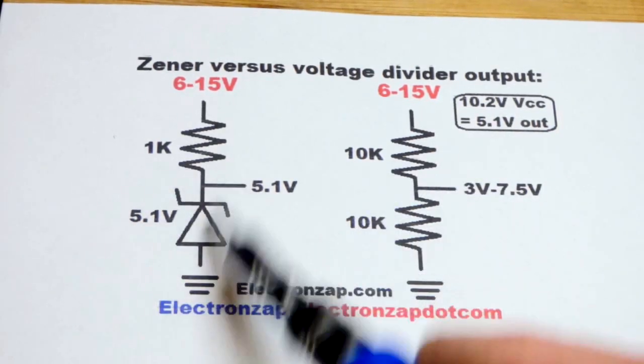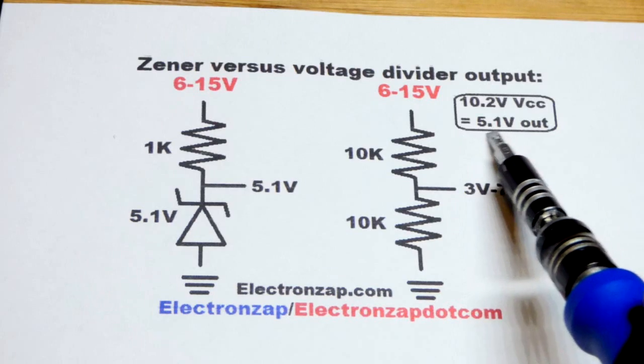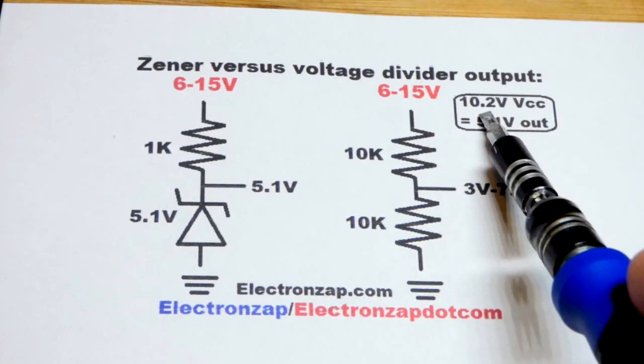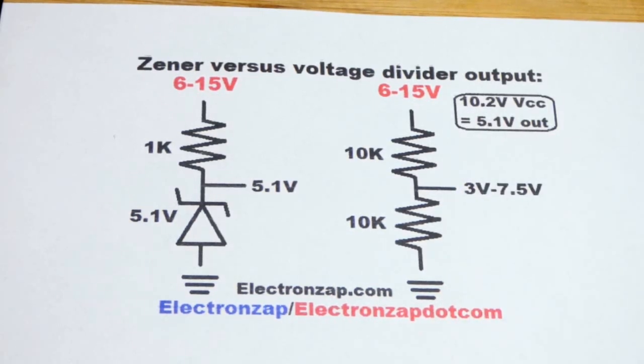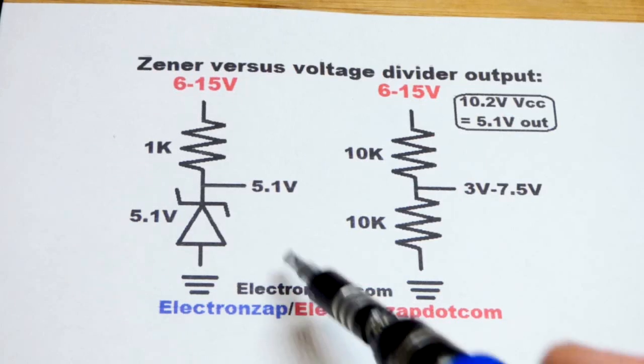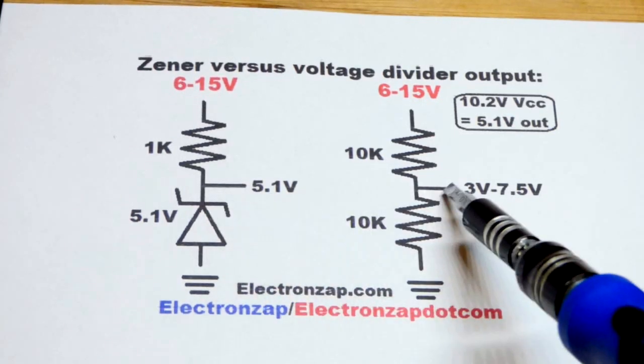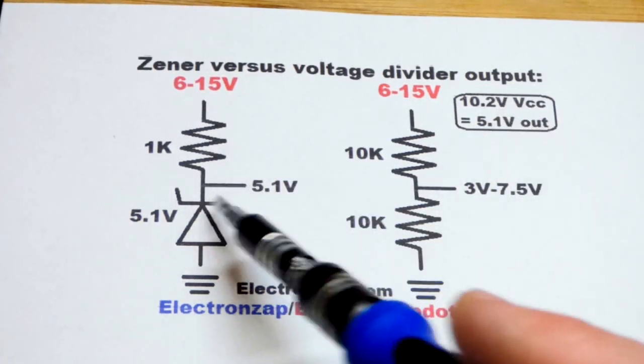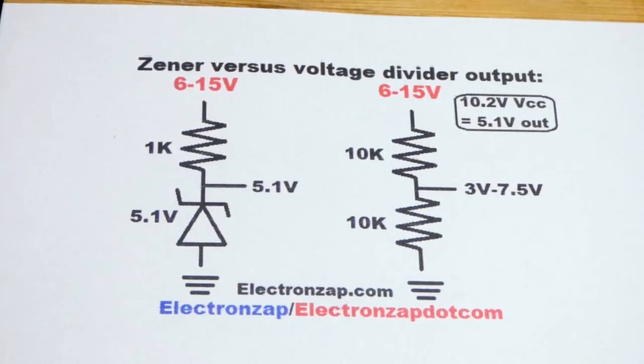then you could set this up. And you'll be monitoring 5.1 volts, but it'll be a 10.2 volt battery. That's a way you can get a lower signal than the battery voltage and still shut something off. That's one example.